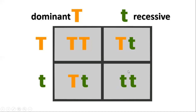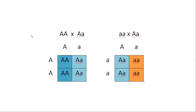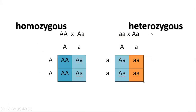Homozygous and heterozygous are key genotype terms. A capital letter represents a dominant allele, while a small letter represents a recessive allele. Homozygous individuals have two of the same alleles — either both capital or both small.